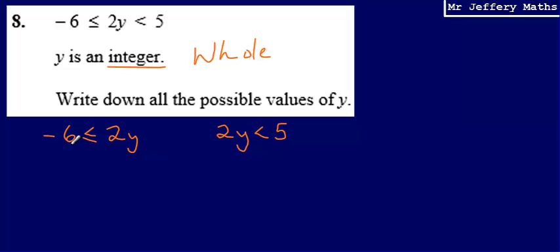Now we've got two inequalities which we can solve nice and easily. So we can say that negative 3 is less than or equal to y, and we can solve this one nice and easily, y is less than 2.5. Then, once we've solved each of these, we can just put this back together. So we can say that negative 3 is less than or equal to y, and y is less than 2.5.